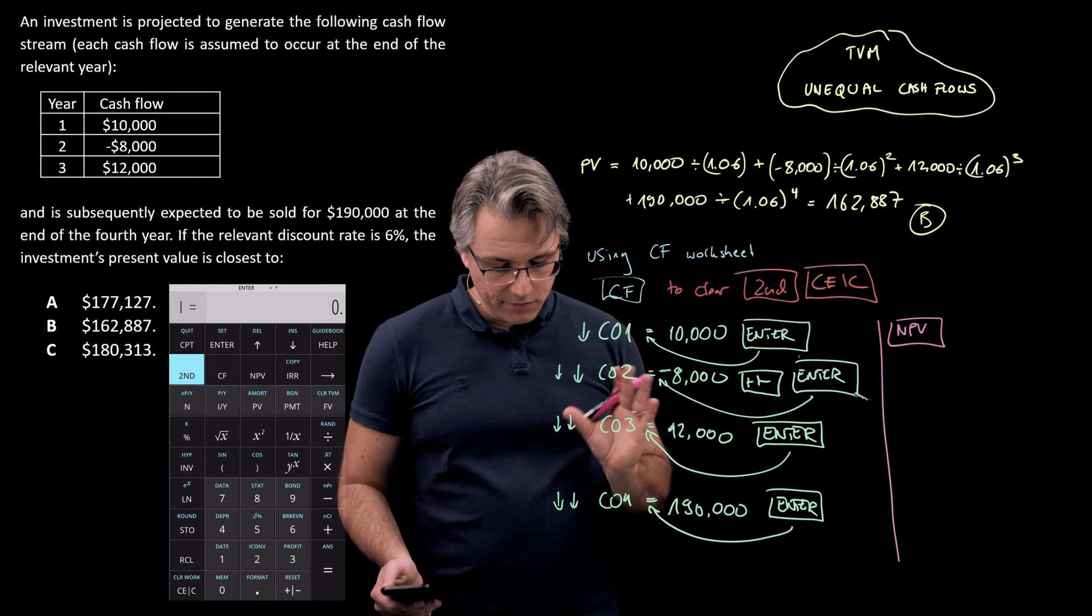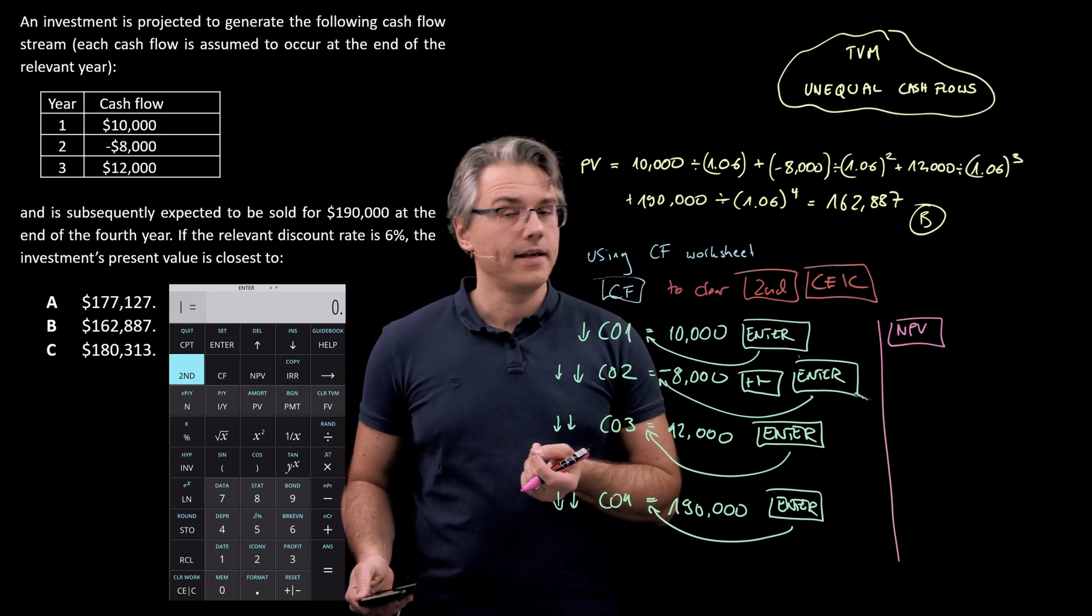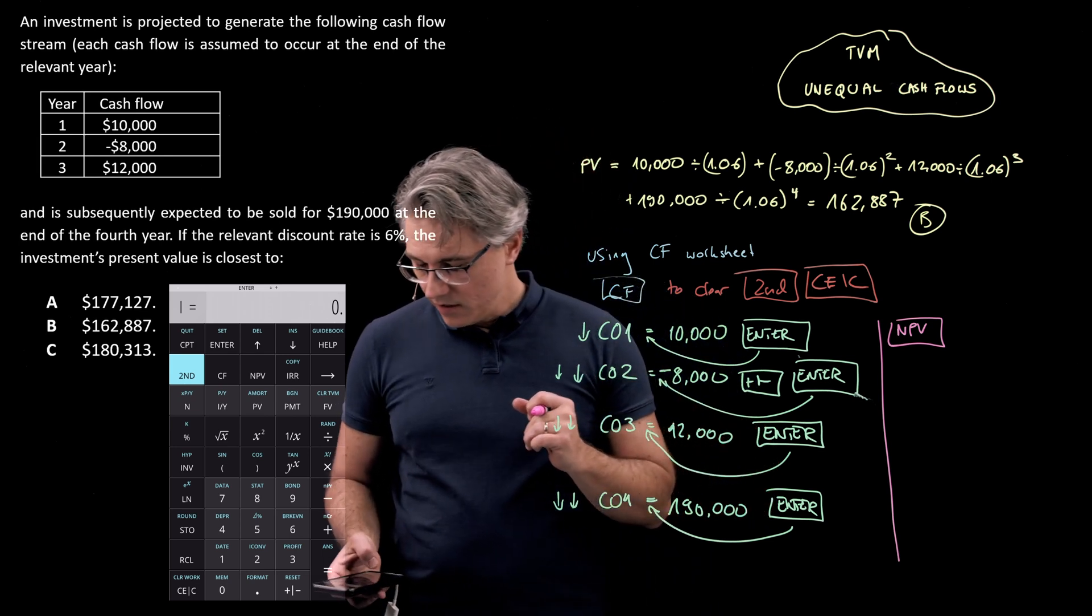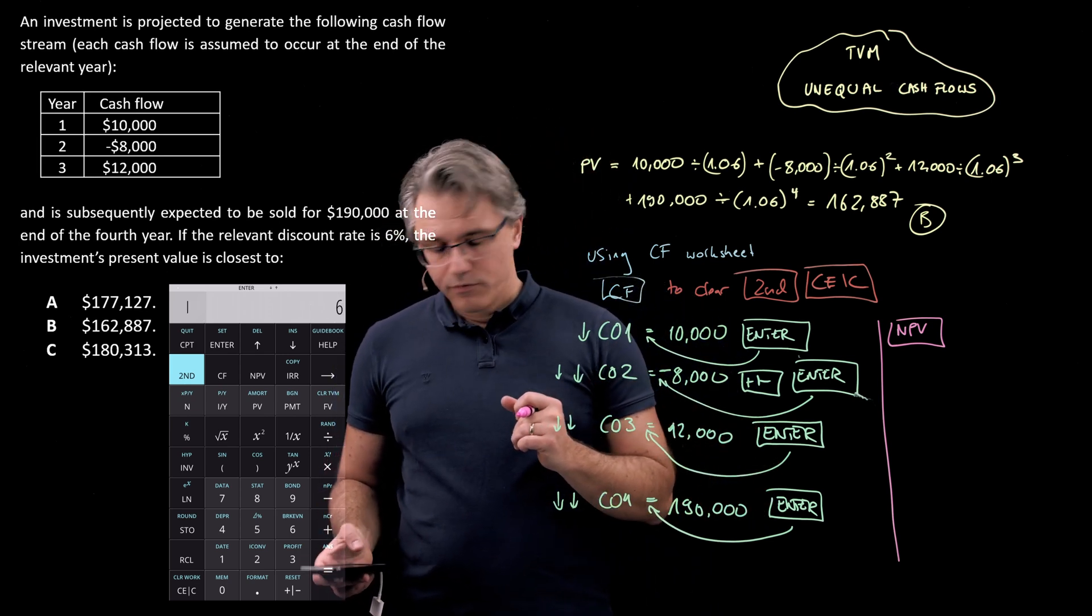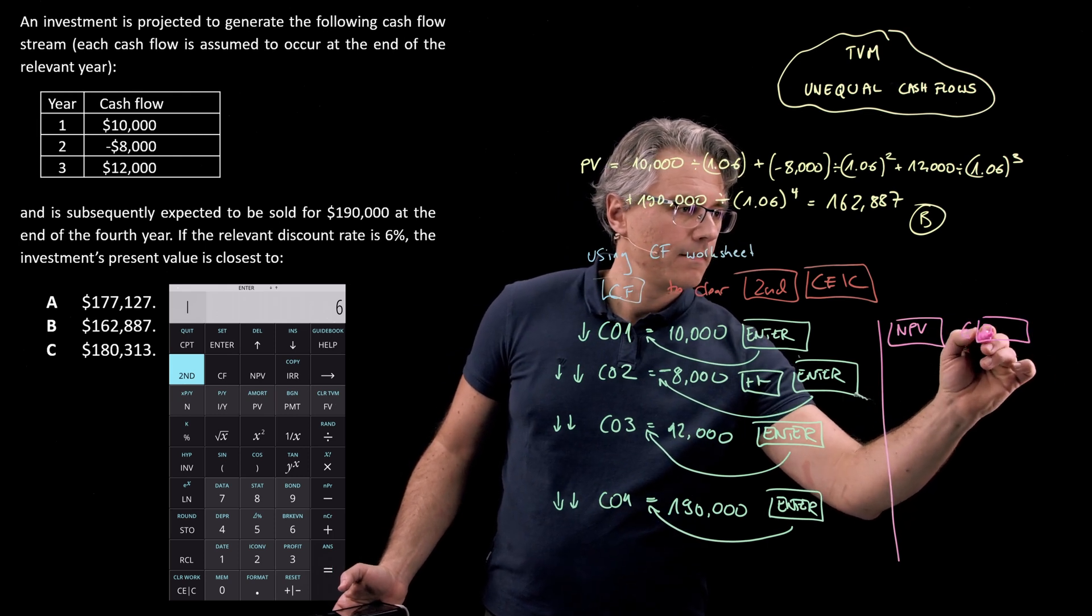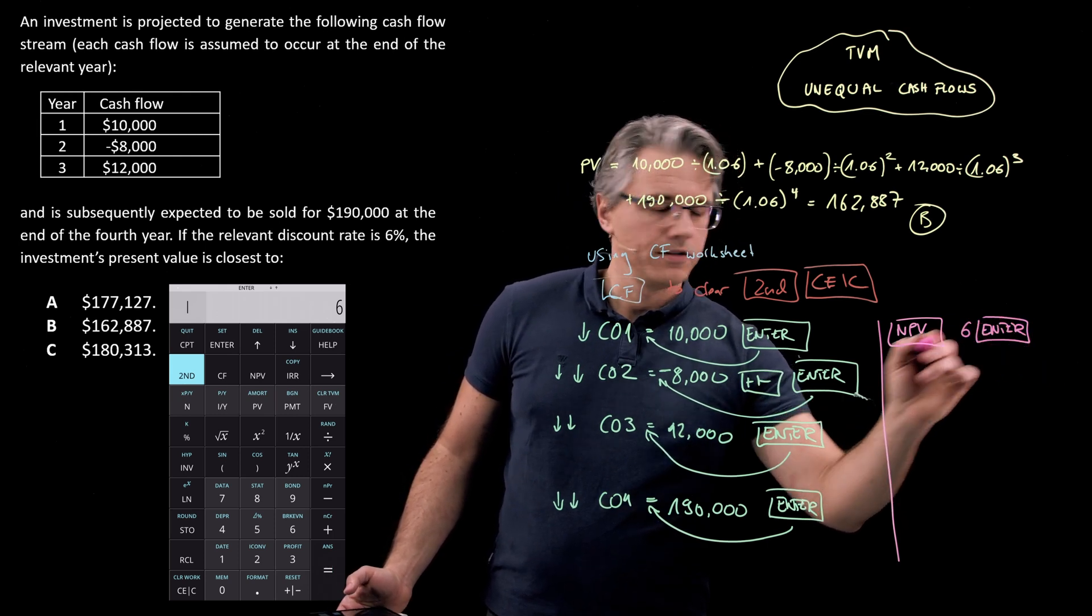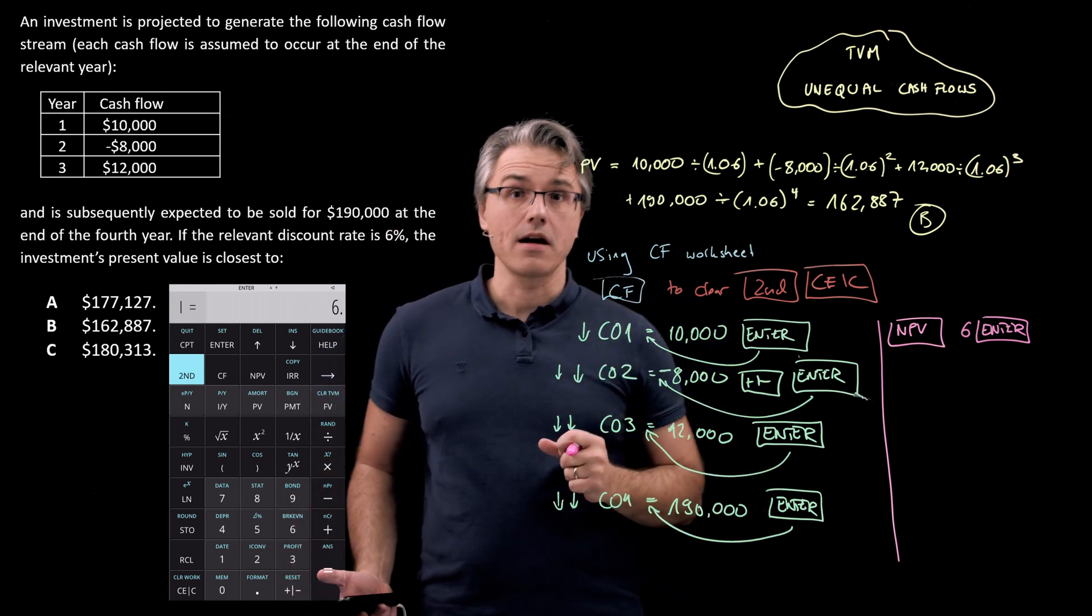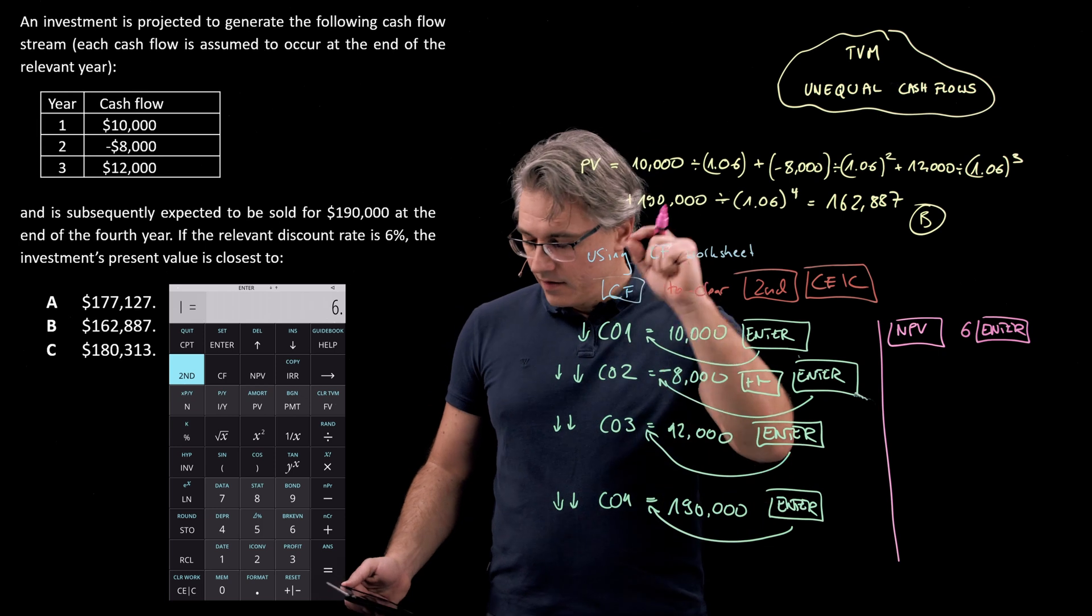And over here, it's going to ask you for I, which, as you can probably guess, is the rate of interest. We want to make this equal to 6. So, press 6. Follow this up with Enter. And you guessed it. It will have the effect of making I equal to 6.